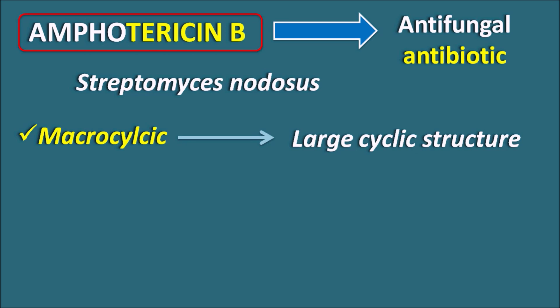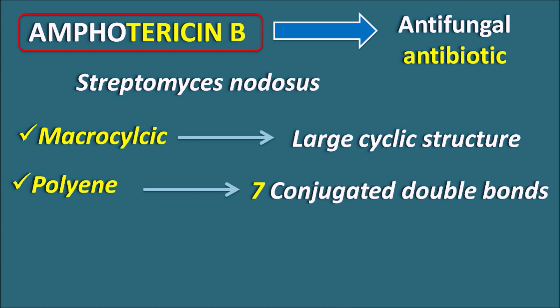The second important feature is that Amphotericin B is a polyene antibiotic. Polyenes are compounds having conjugated double bonds. Amphotericin B has seven conjugated double bonds. We have another polyene antifungal agent, Nystatin, which is not used for systemic fungal infections — it is only prescribed for topical fungal infections.